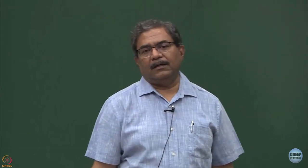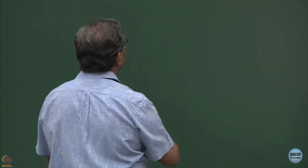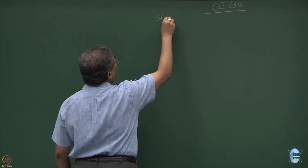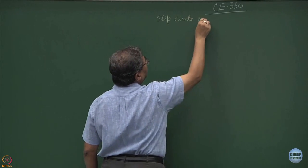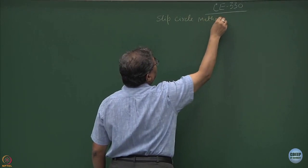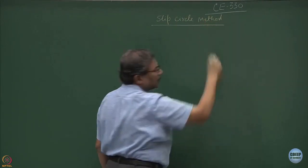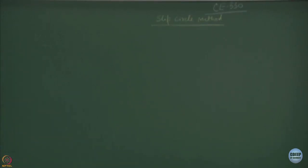Having done the slip circle or method of analysis of finite slopes, I will now be talking about the slip circle method, which is the simplest possible form of analysis of slopes for finding out their stability. Slip circle method — simplest possible method.